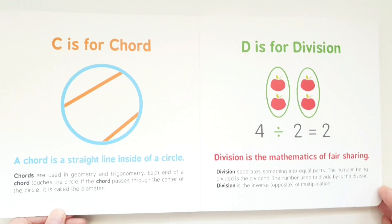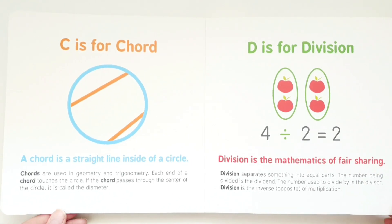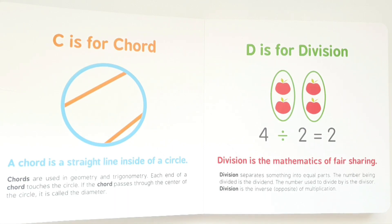C is for chord. A chord is a straight line inside of a circle. Chords are used in geometry and trigonometry. Each end of a chord touches the circle. If the chord passes through the centre of the circle, it is called the diameter.